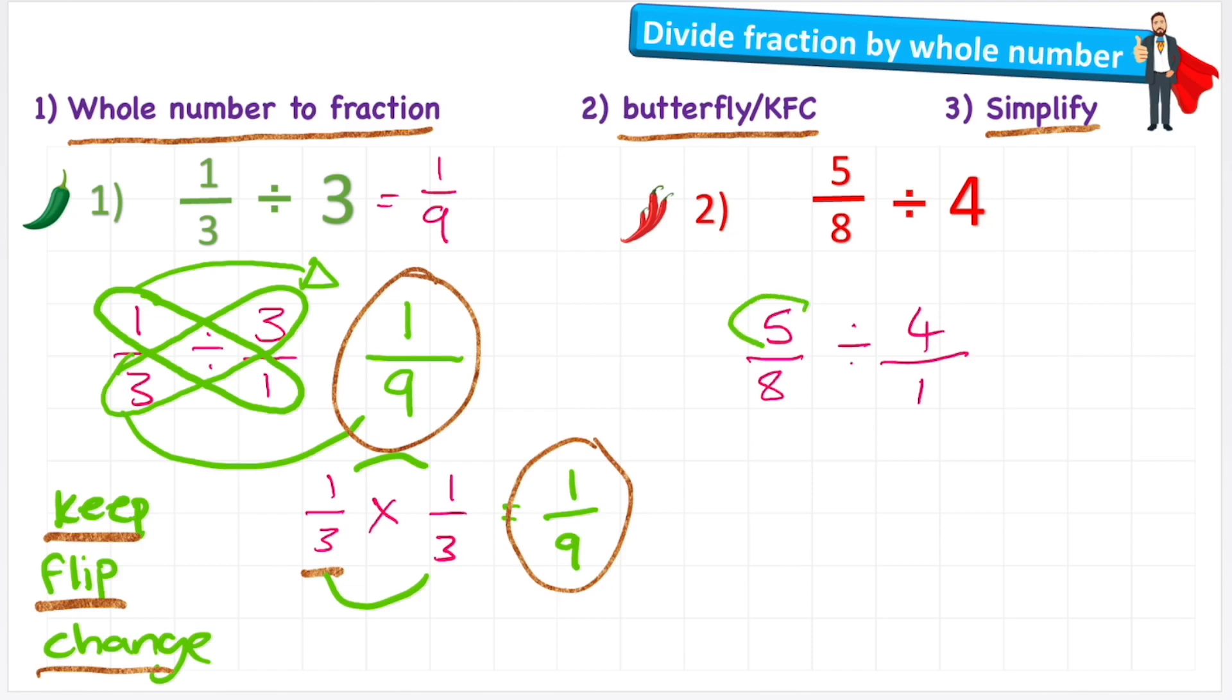So I multiply the numerator by the denominator. And five times one is five. Now I can do the denominator by multiplying the eight by the four. And eight times four is 32.